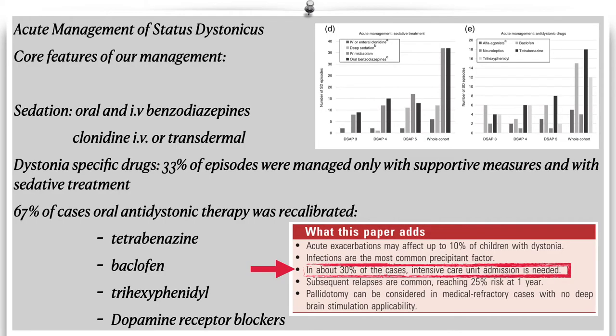The core of our study was to analyze the acute management of status dystonicus episodes. We analyzed temporizing sedation using oral and intravenous benzodiazepines, and alternatively clonidine administered transdermally or intravenously. Dystonia-specific drugs are another important feature of management, as in 67% of cases oral anti-dystonic therapy was recalibrated.